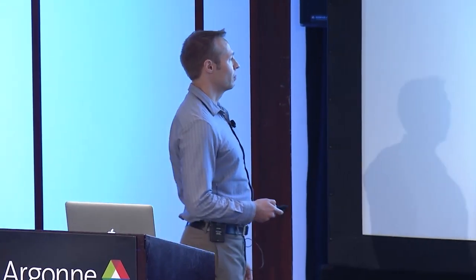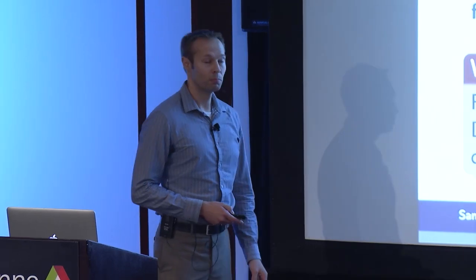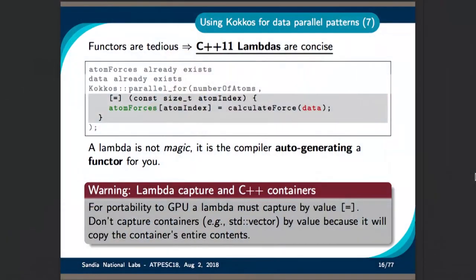There's a warning when using lambdas: for portability purposes, lambdas have to capture by value for the GPU. Also, you don't want to capture containers like std::vector by value because they'll copy the container's entire contents, and on top of that, std::vector won't work on the GPU. So if you're a fan of std::vector, at some point you would need to replace that data structure.